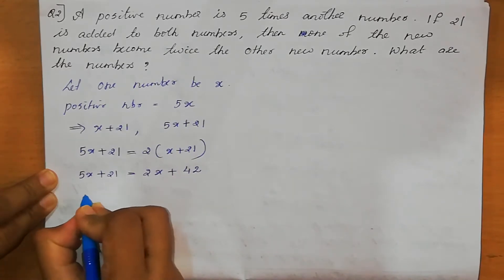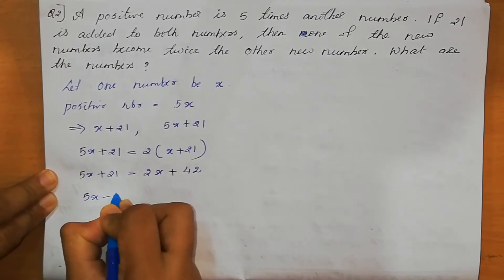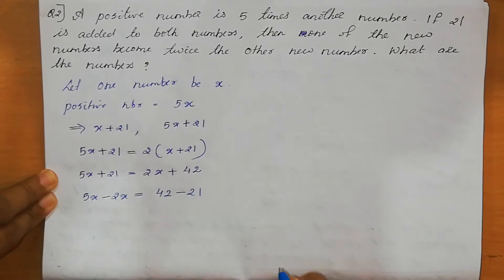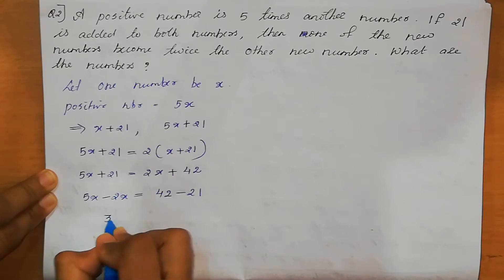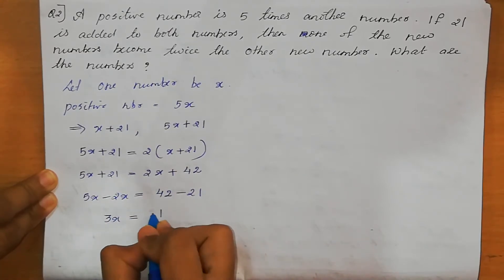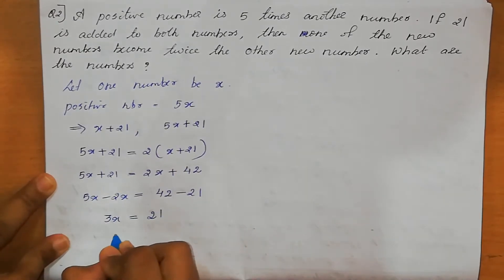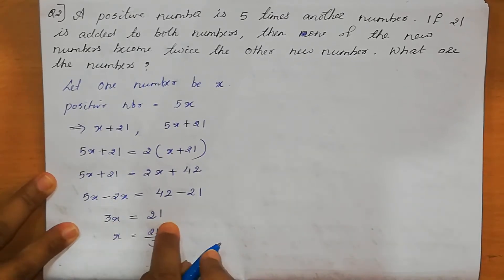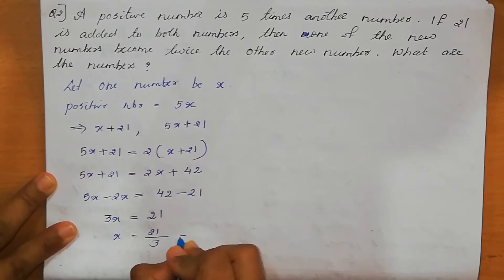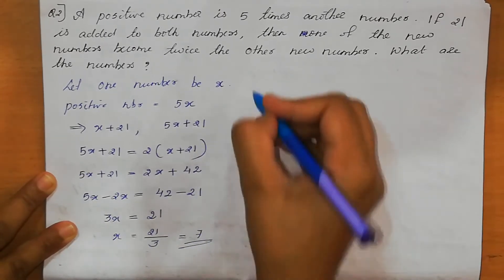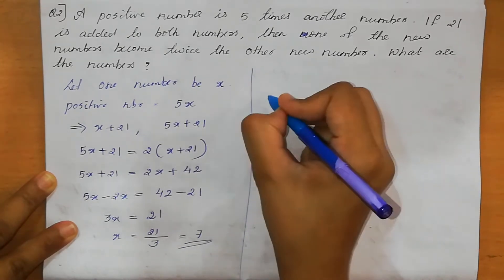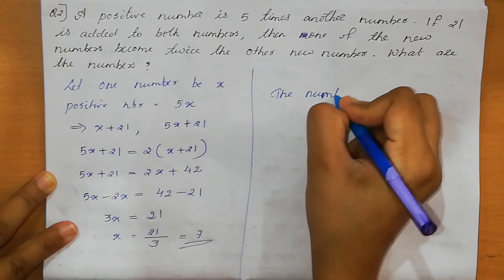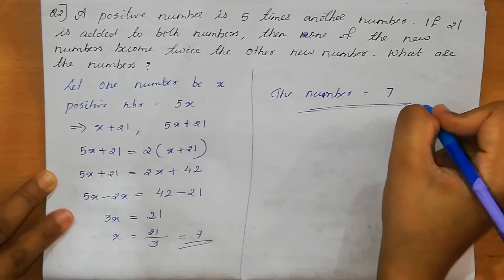5X minus 2X equal to 42 minus 21. 5X minus 2X is 3X equal to 21. Therefore X equal to 21 divided by 3. 7 threes are 21. So X value equal to 7. Therefore the number equal to 7. This is the final answer.